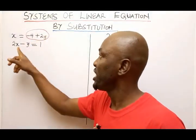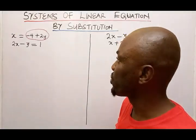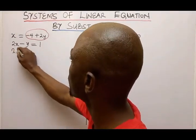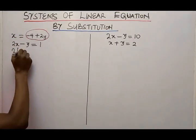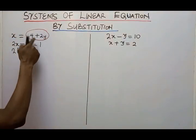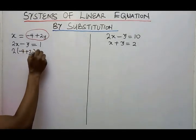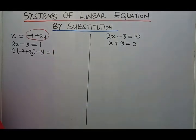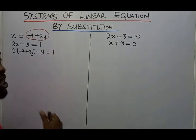In substitution, we want to plug in the X value from the first equation into the second equation. If we do that, our new equation becomes 2 times bracket — X value is minus 4 plus 2Y — then minus Y equals 1.